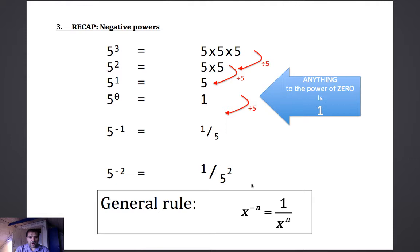So the general rule is that something to a minus power is 1 over the corresponding positive power. x to the minus n equals 1 over x to the n.